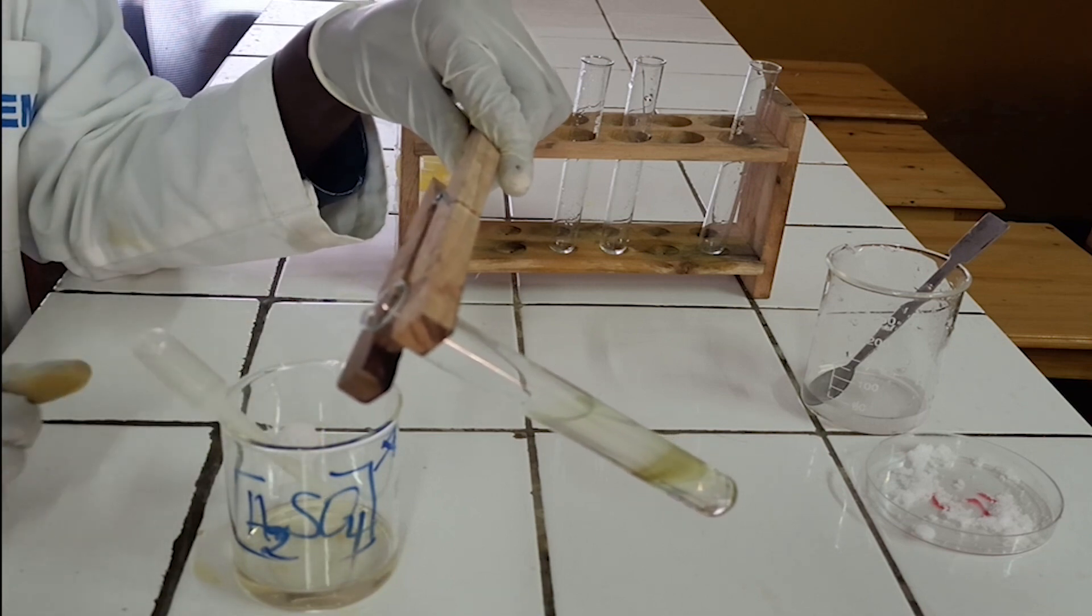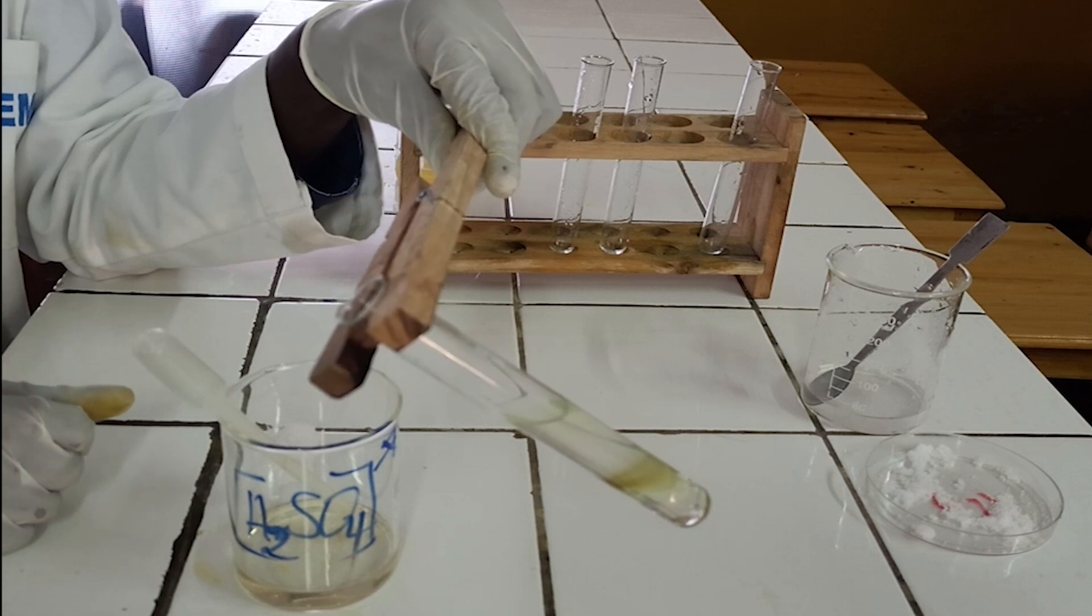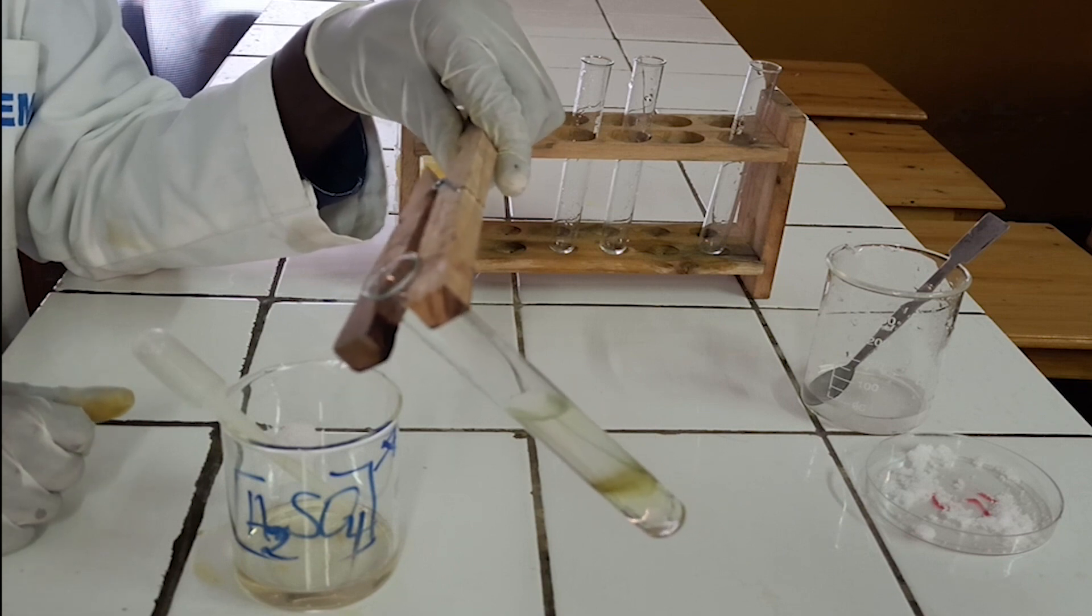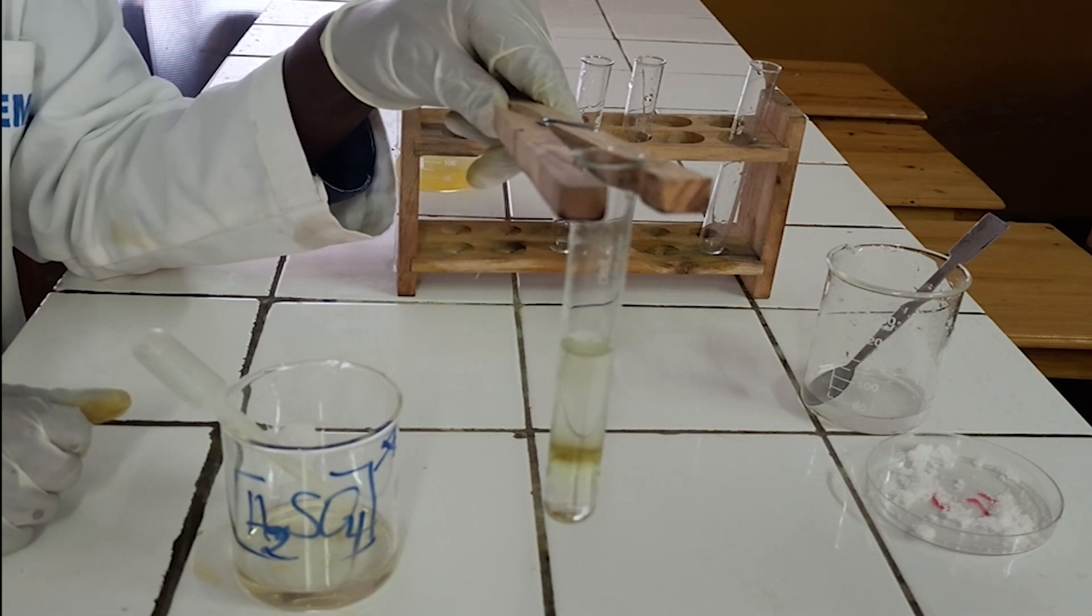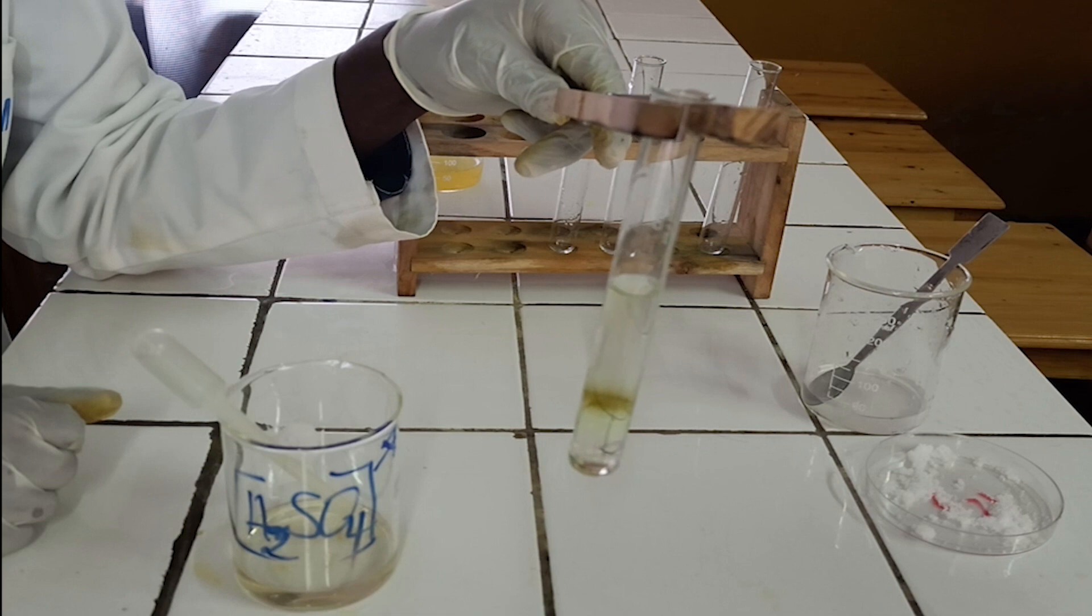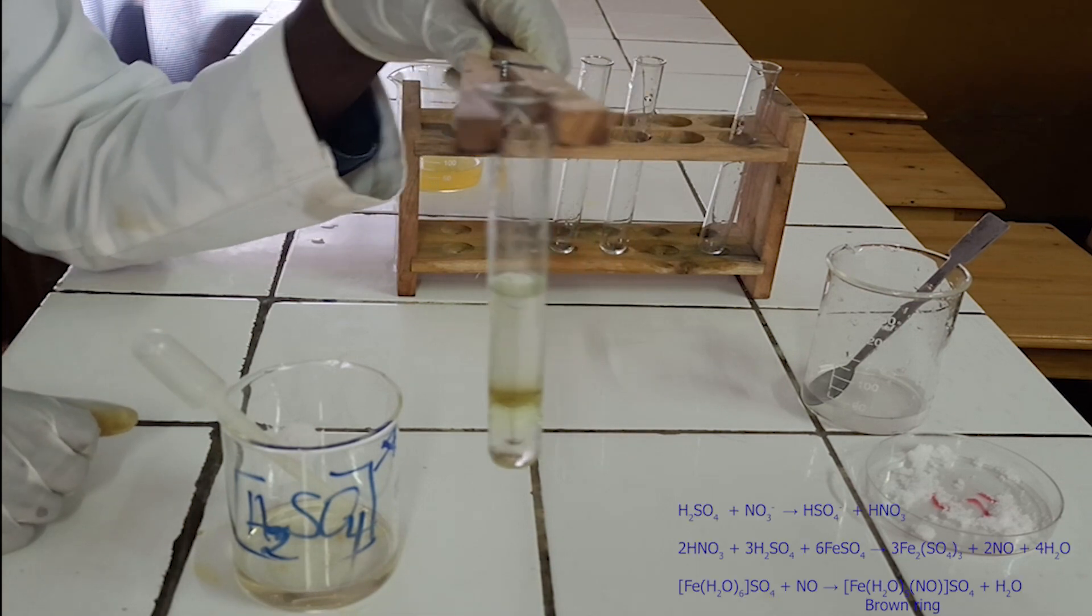As you see, iron-2-sulfate reacts with nitrate ion in acidic medium to form brown ring between iron-2-sulfate solution and concentrated sulfuric acid. Below, there is chemical equation for this reaction.